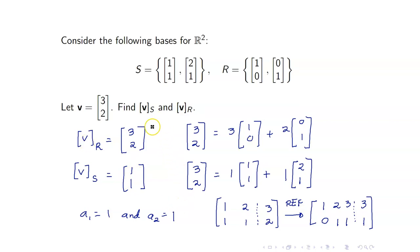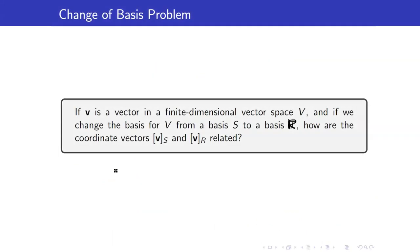From this example, we've noticed that the coordinate vector is easy to compute when we are dealing with the standard ordered basis. However, when it's no longer the standard ordered basis, we still have to do some computations. How are these two coordinate vectors related? That is the change of basis problem that we want to consider — if we change the basis of a vector space from one basis to another, how will the coordinate vectors be related?